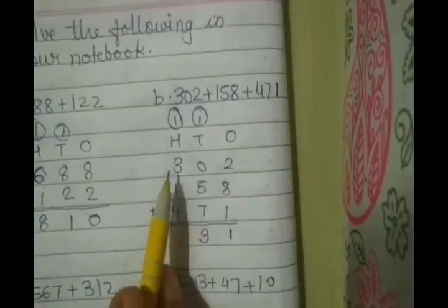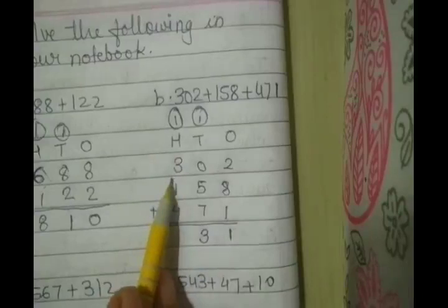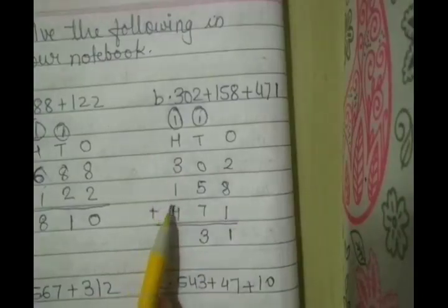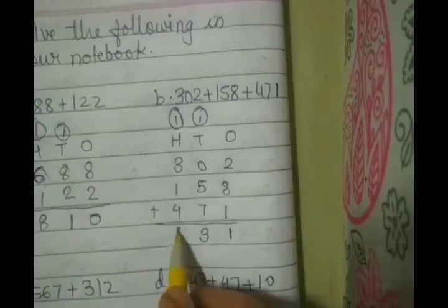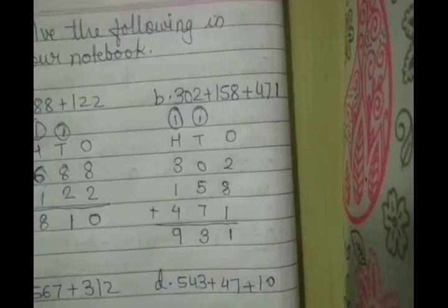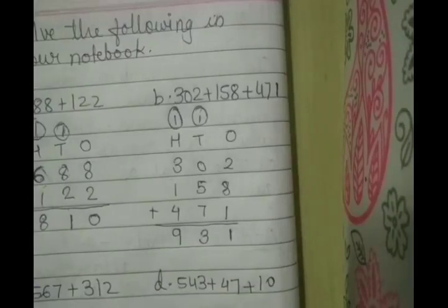Now here 1 plus 3, 4 plus 1, 5 plus 4, 9. So the answer is 931.